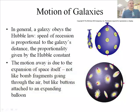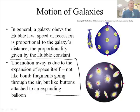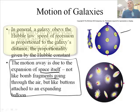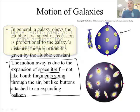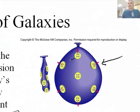Now, this is a very important concept. A lot of people get a misunderstanding. The motion away is due to the expansion of space itself, not like bomb fragments going through the air, but like buttons attached to an expanding balloon. In essence, what they're thinking here is that the button on the balloon here is a galaxy. And what's happened is the entire balloon has been blown up. And the galaxies are further apart here than they are here.